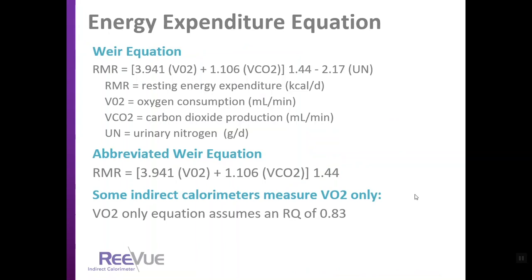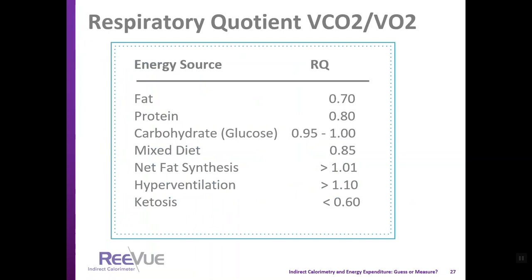Some indirect calorimeters measure oxygen consumption only and use an equation that assumes an RQ of 0.83. Respiratory quotient (RQ) is the ratio of CO2 produced to oxygen consumed: VCO2 over VO2. For fat the RQ is 0.7; for carbohydrate it is 0.95–1.0; for a mixed diet it is about 0.85. An RQ above 1 may indicate overfeeding or net fat synthesis, and an RQ of 1.1 or higher likely indicates hyperventilation — an inaccurate test. An RQ below 0.6 may indicate ketosis.